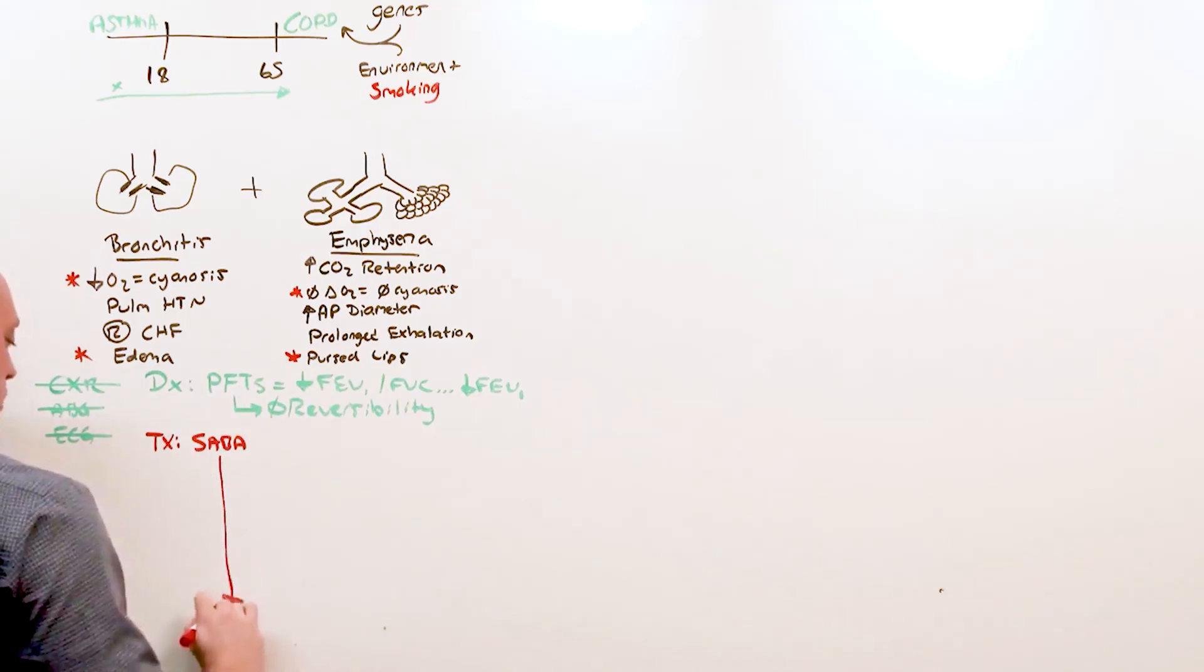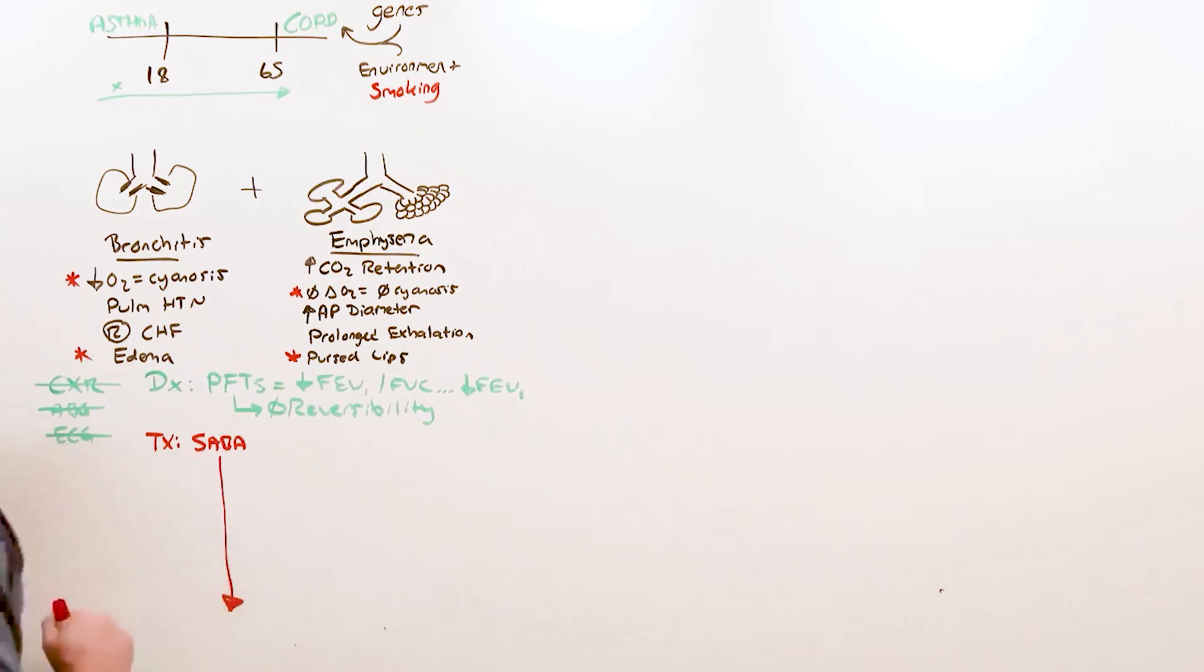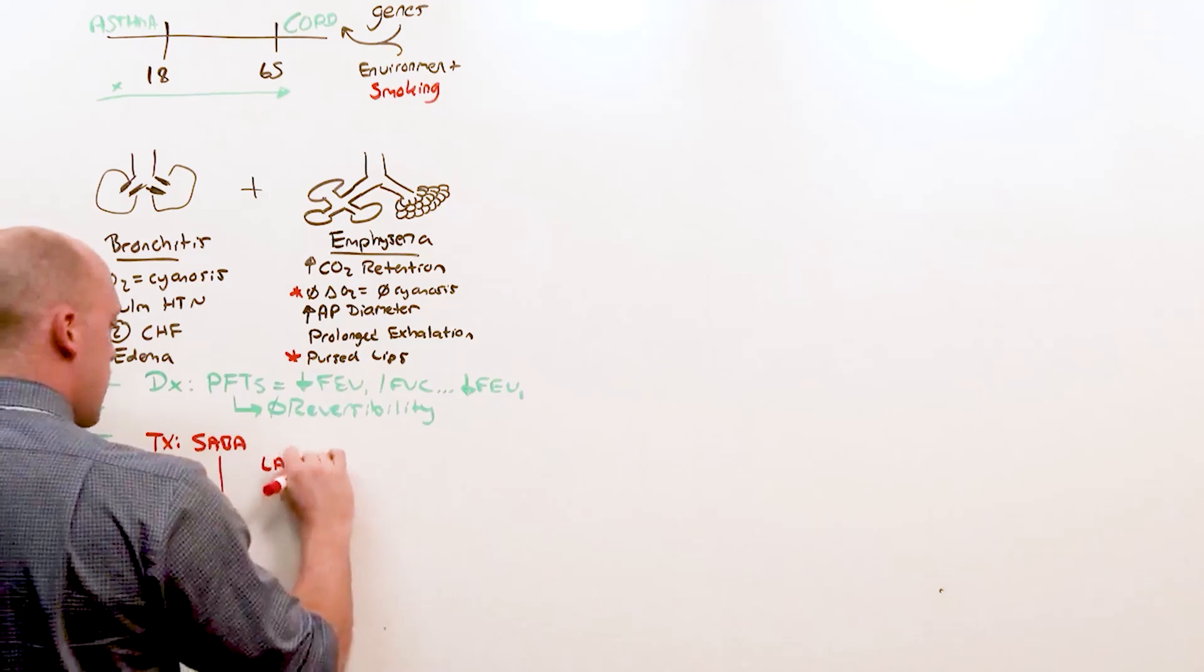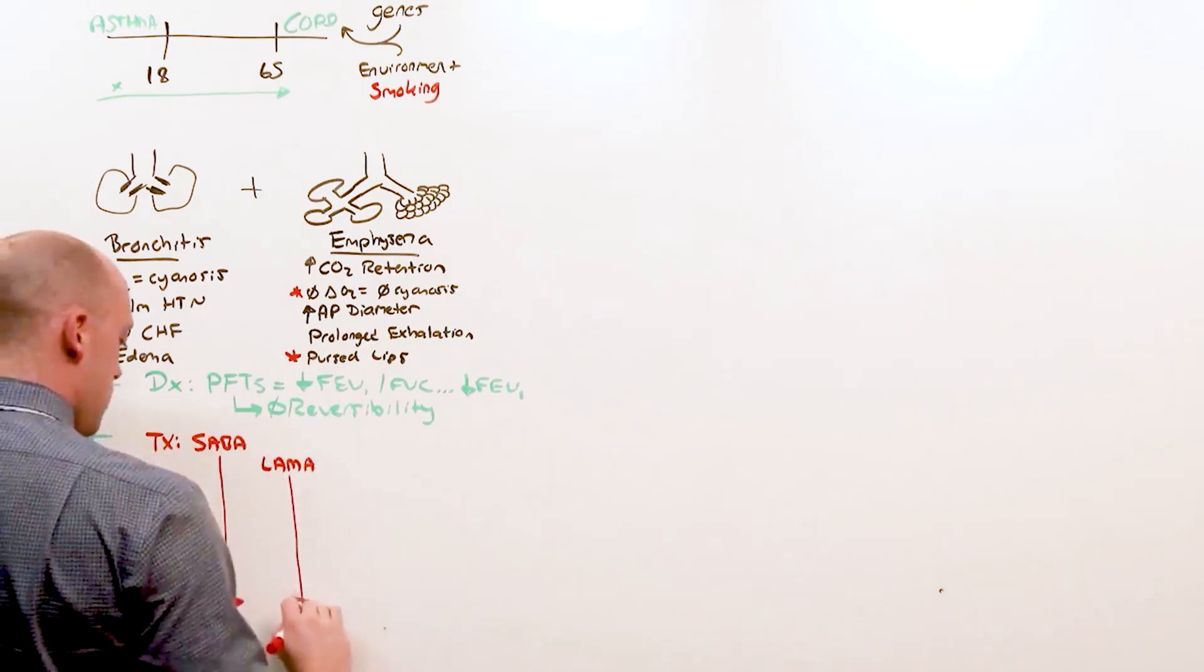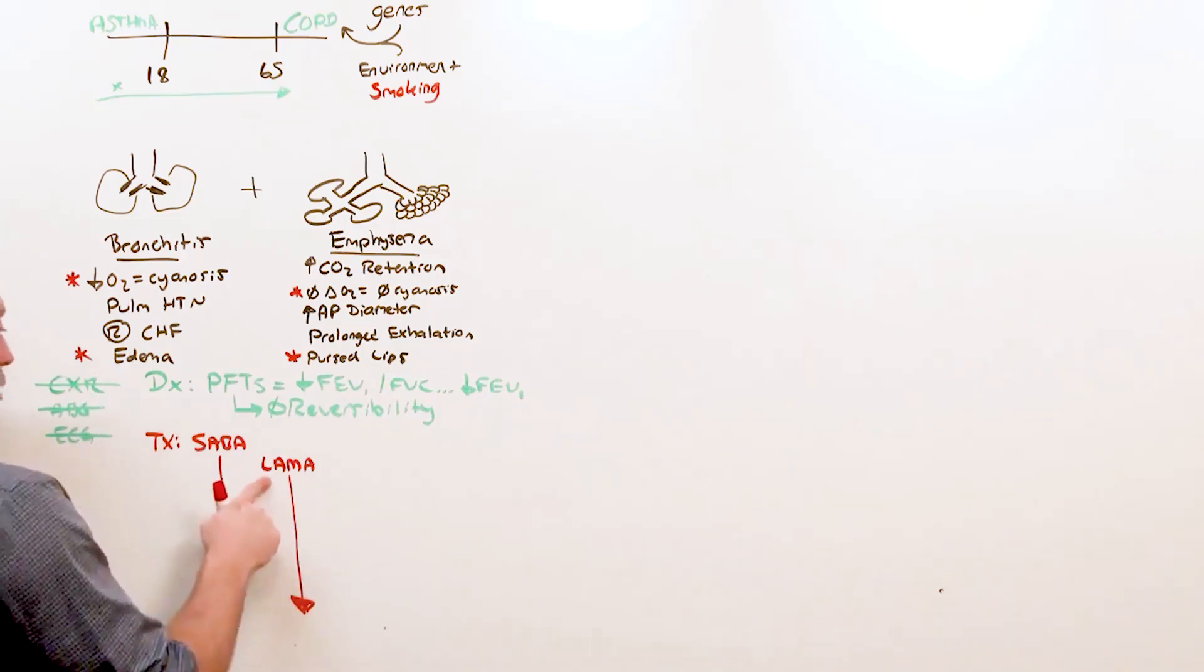What's cool is that everything we add on includes the thing before it. So you start off with a short-acting beta agonist, much like you do in asthma, albuterol. But then you do something different for COPD. You're going to add a long-acting muscarinic antagonist. This is tiotropium. You don't do that in asthma. Tiotropium is the first long-acting medication you introduce in COPD.